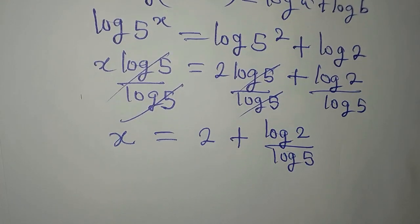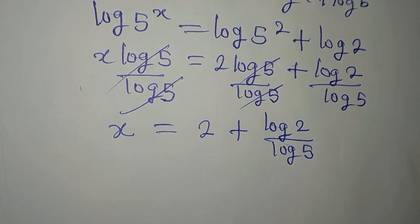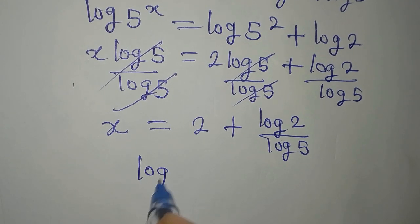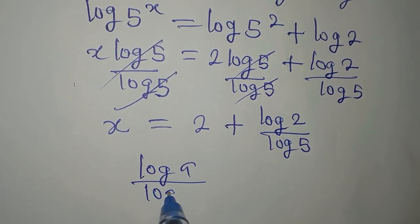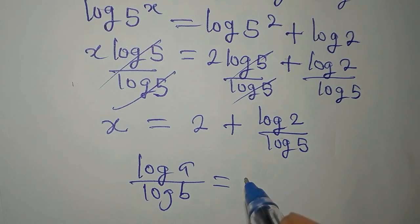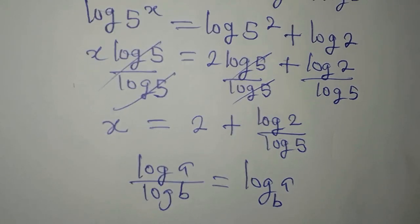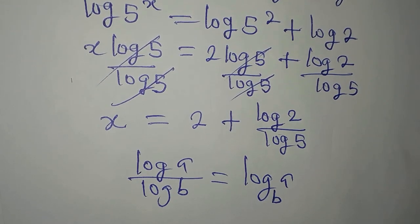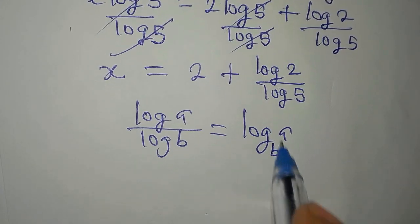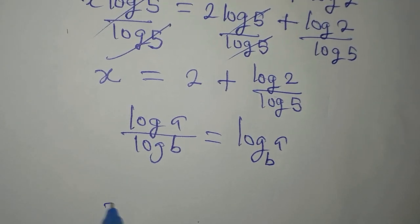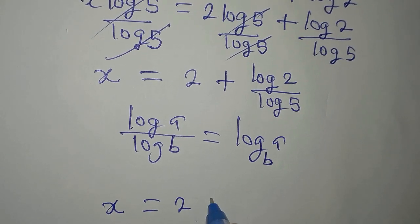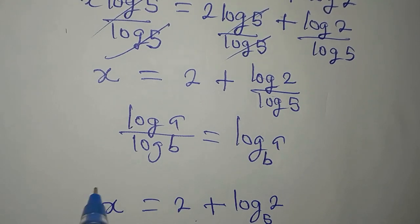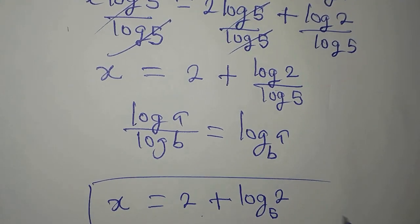Now, log 2 over log 5 — we can apply change of base, because log a over log b is the same as log a to base b, since both share the same base. Applying this, we get x equals 2 plus log 2 to base 5. This is the value of x.